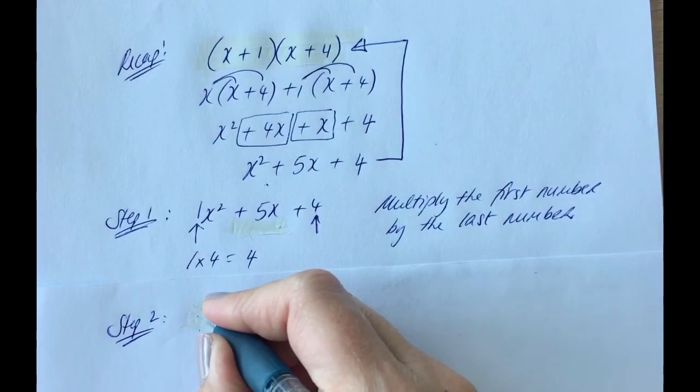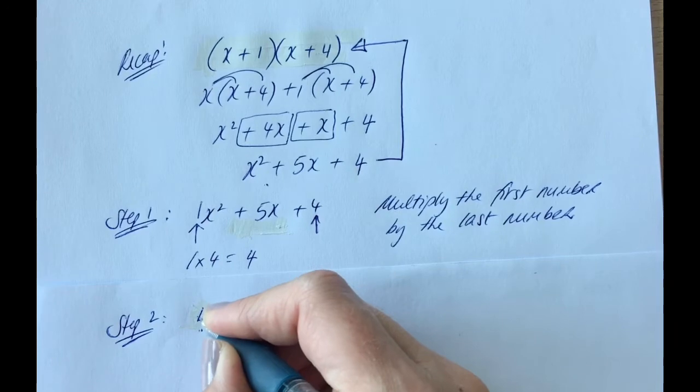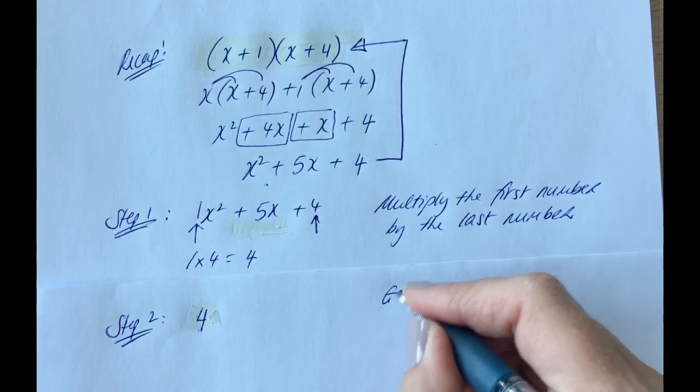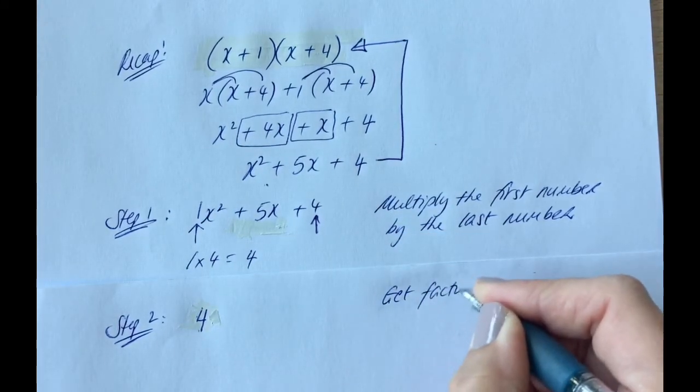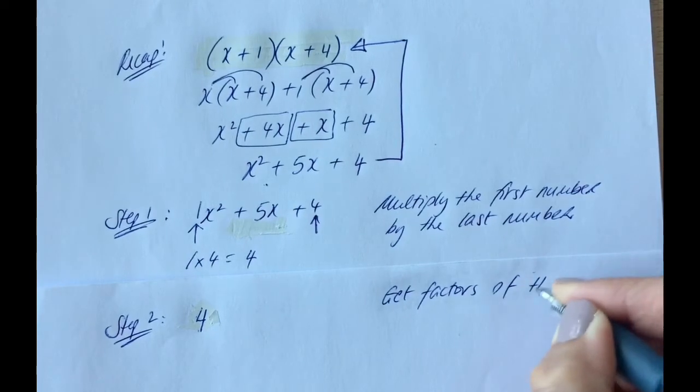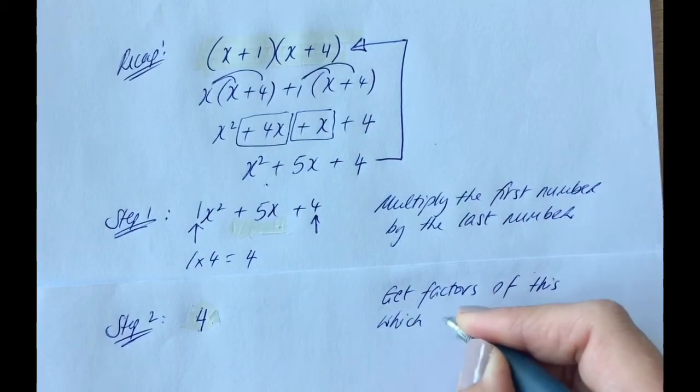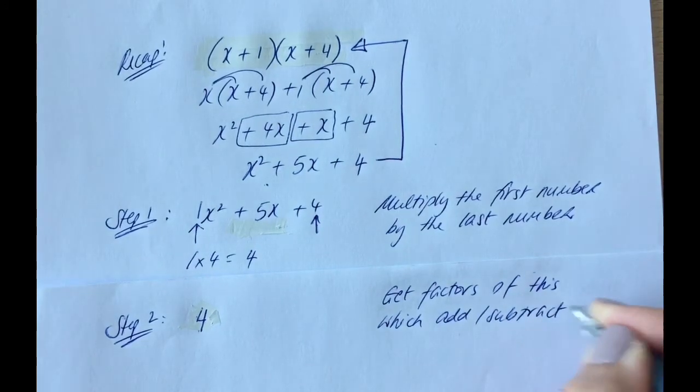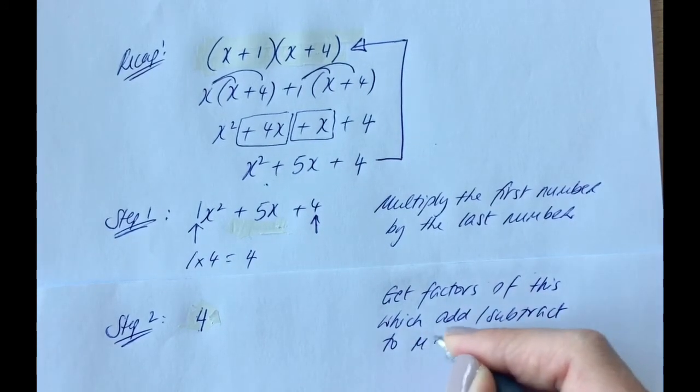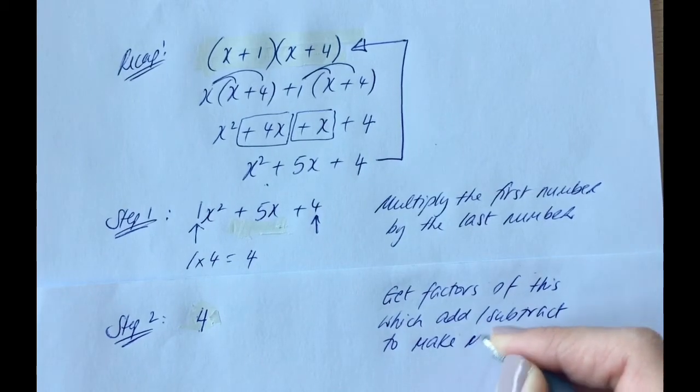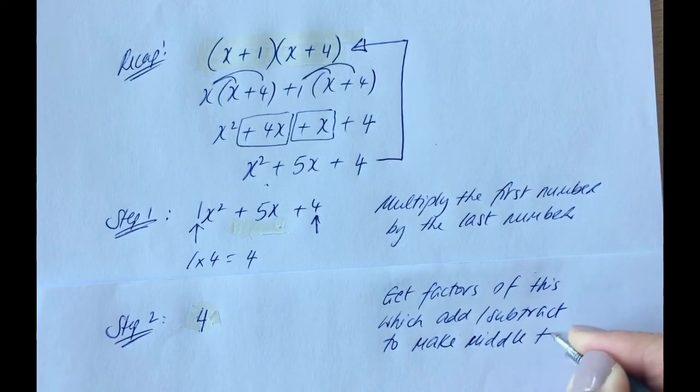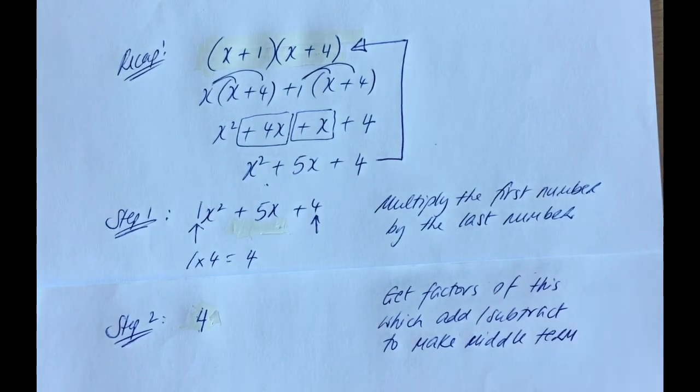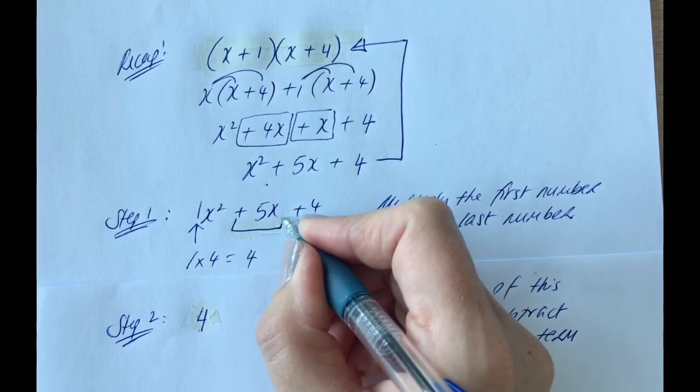Okay, so step 2 is to take this number, and we're going to get factors of this number. So we'll get factors of this, which add or subtract to make middle term.